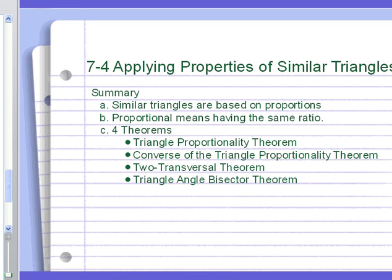All right, so that is it. So what have we done? Similar triangles are based on proportions. So we did a lot with proportions. Proportion means we have the same ratio, and we had four theorems dealing with proportions. Triangle, can I say proportions enough times, you think? Triangle proportionality theorem, converse of triangle proportionality theorem, two transversal theorem, and my favorite, triangle angle bisector theorem. Nice job. Good luck bringing questions to class.